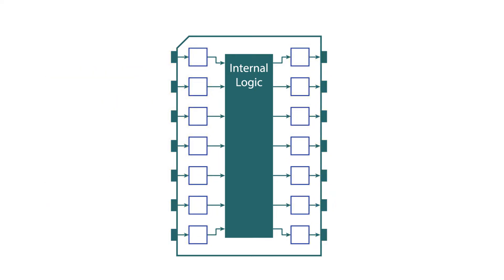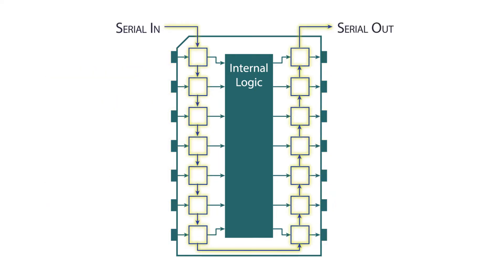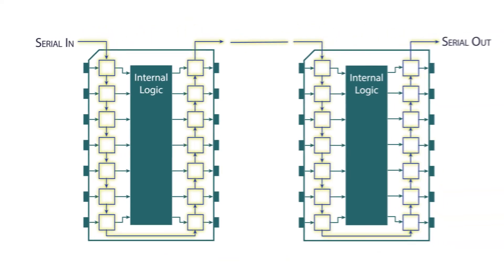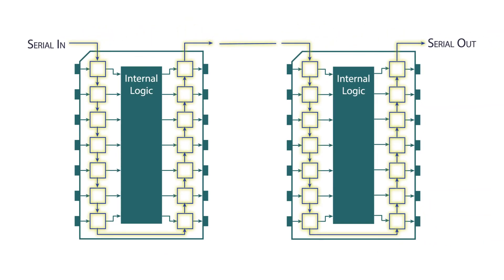To gain test access to these registers, there's a separate serial data chain independent of the functional paths. Test setup information flows into the chain's input, propagating to the chain's output. If there are multiple ICs with boundary registers, they can be concatenated to make a longer chain. This same data chain is also used to offload measured data.